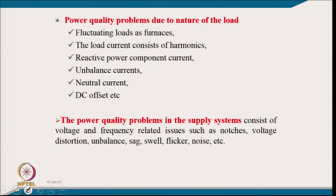Power quality problems due to the nature of the load can be because of fluctuating loads like furnaces. Load current can consist of harmonics, reactive power component, unbalanced current, neutral current, and DC offset current — all produced because of the nature of the load.